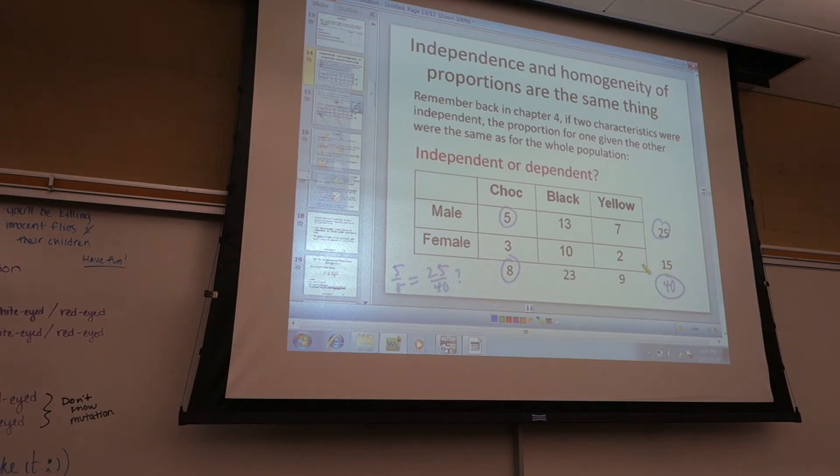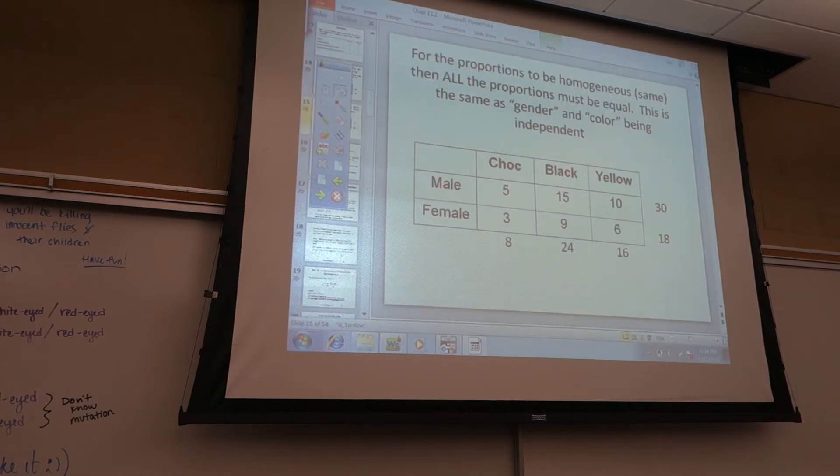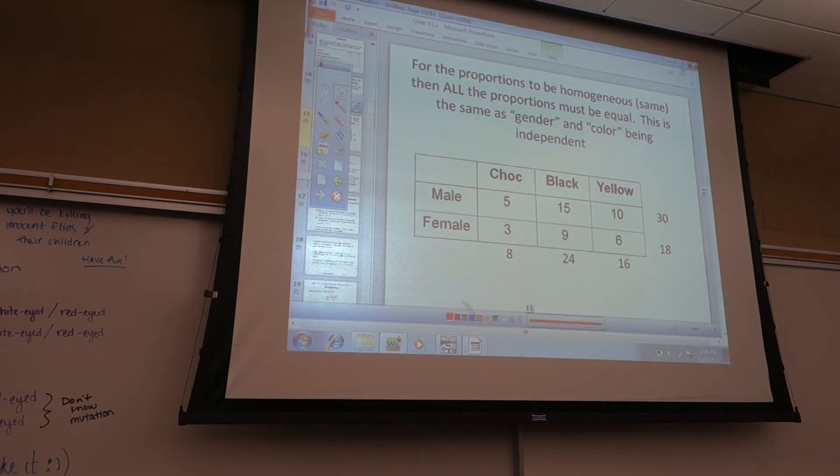So if it's going to be independent, that means equal, so that would be H naught? Yes. Exactly. Independence means H naught. So here, for the proportions to be homogenous, that means that all the proportions must be equal. So it means that this proportion, that proportion, that proportion, that proportion, all have to be the same. Because now we're looking at gender, like both male and female, and the type of lab. So everybody find these proportions. Five over eight. Fifteen over twenty-five. Ten over sixteen. Find them all. Get your calculator. Find them.